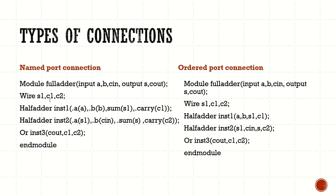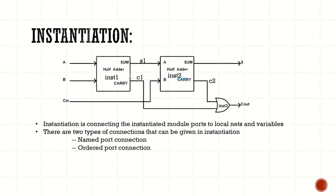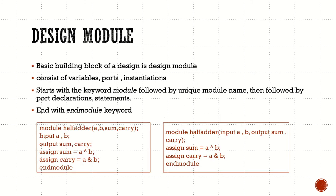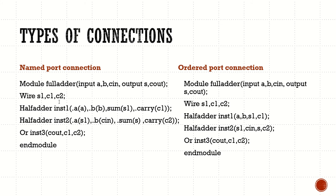The internal signals S1, C1, C2 appear between the sub-modules. When instantiating the half adder modules, we give the module name we used — for example 'half_adder' — and then a unique instance name. In named port connection, we specify the signal names present in the module and the corresponding signal names in the instance.